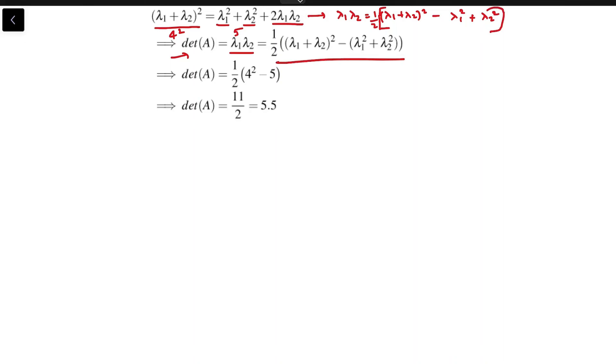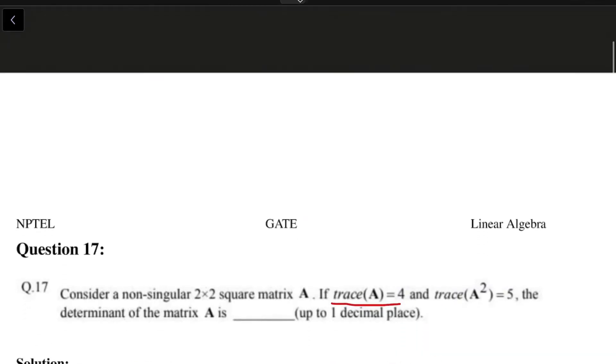Which is what is given here. So this is half into 4² minus 5, that is half into 16 minus 5, that is 11/2, and the answer is 5.5. Thus, the answer to this question is 5.5.